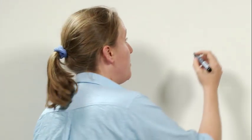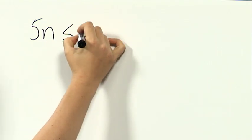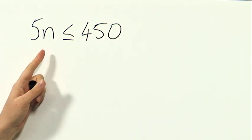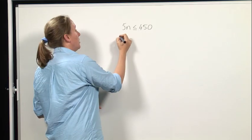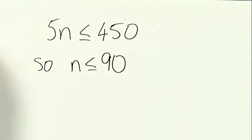We know that for a good day we need at least five people swimming, so each good day we need at least five fish. So 5n must be less than or equal to 450. On each of the n good days we need at least five fish, but we know that we've only got 450 fish available. So we can see that n is less than or equal to 90.